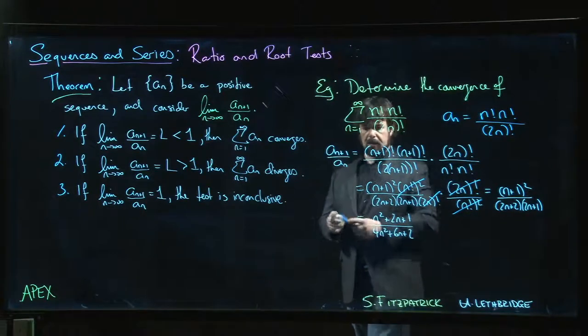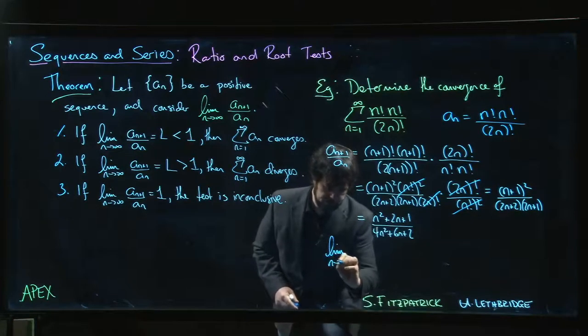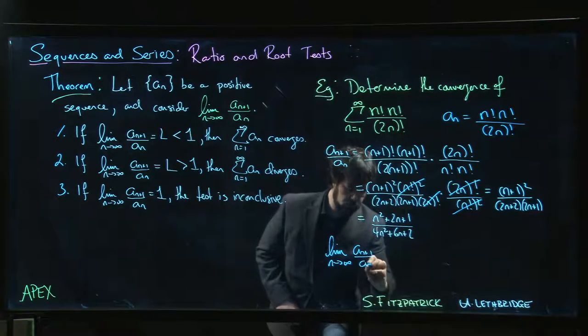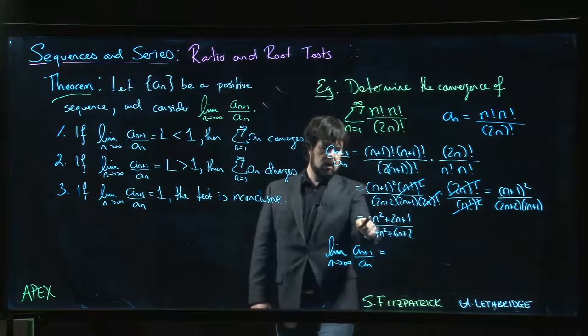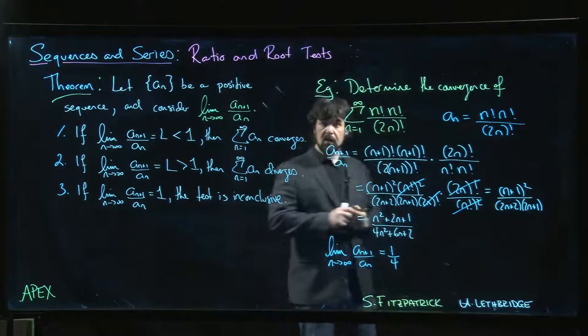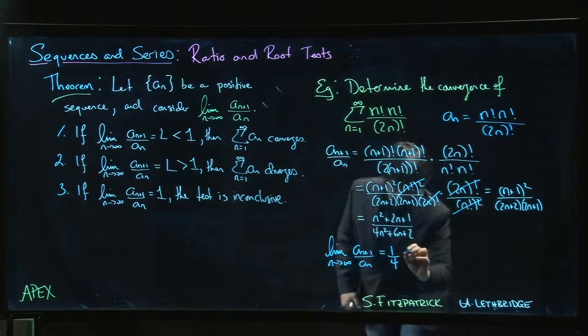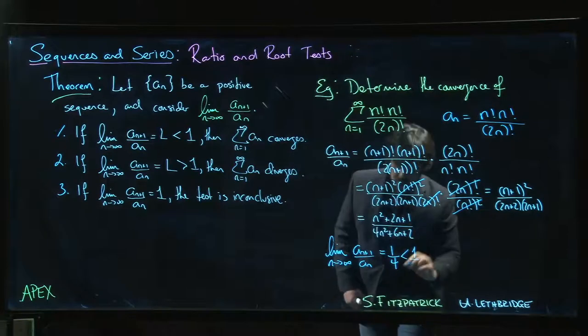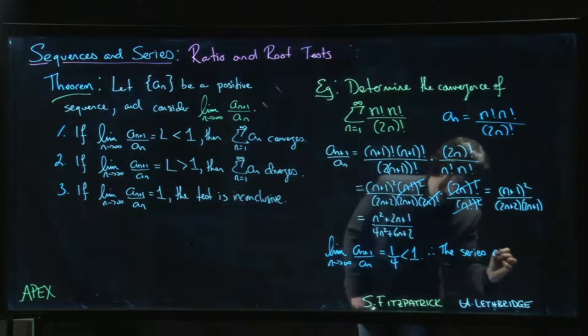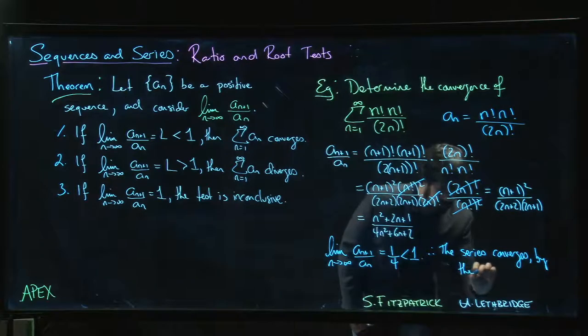So what's the limit? The limit as n goes to infinity of A_{n+1} over A_n. Well, it's 1 over 4. All right, it's a rational function. Top degree is n squared, top and bottom. And 1 over 4 is less than 1. And that means that the series converges by the ratio test.